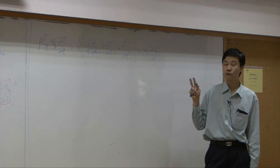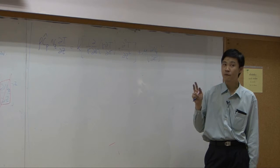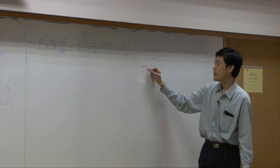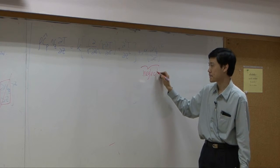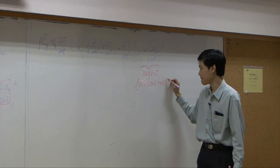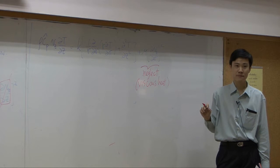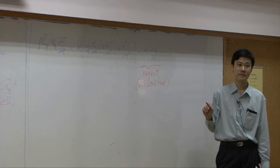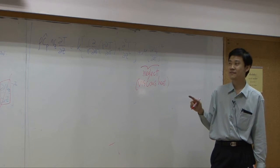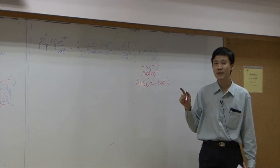So we have convection in Z, conduction in Z, conduction in R, and viscous heat. Which term can be dropped? Viscous heat — if you think it is too much to be solved, this term can be neglected first because it is viscous heat. So you have three terms left. Can you solve it? If you cannot solve it further, just drop more terms.